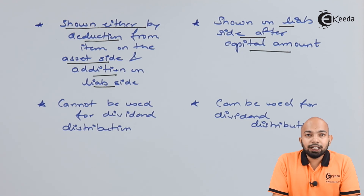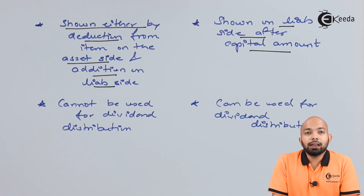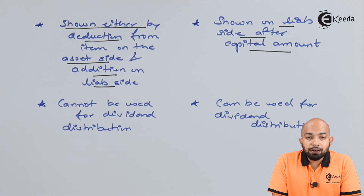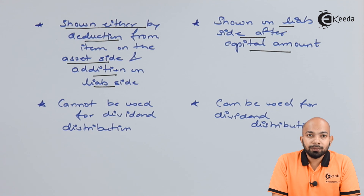The next difference: reserve is shown on the liability side under the capital amount. However, when it comes to provision, if shown on the asset side it is shown as a deduction from it, and if shown on the liability side it is shown as a part of liability. So when mentioning provision in the balance sheet, you either show it as a deduction from assets or as an addition to liabilities.